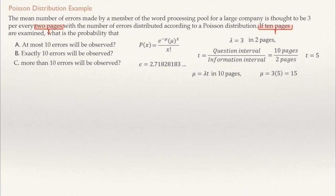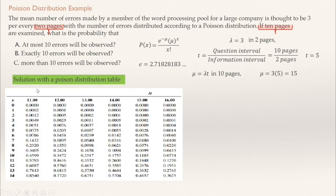We are going to solve these three problems using tables — the solution with the Poisson distribution table. Usually a Poisson distribution table looks like this. You have several values for mu — some tables label it lambda or lambda t, but this is mu because lambda t equals mu, the average. Whatever table you have, it will always have possible values for the mean: 1, 2, 3, 4. In my case, I give you a part of the table with mean equal 11, 12, 13, etc. Since the mean is 15, I will be using the column for 15.